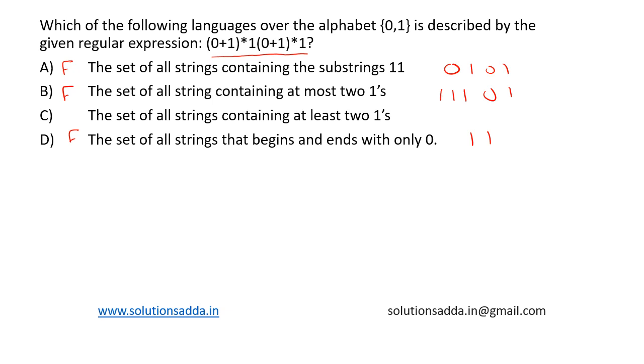Yes, this is correct because the minimum string that is generated by this grammar is 11. Now from this we can expand and generate more 1's. So option C is the correct answer—that is, the set of all strings containing at least two 1's. Option C is the correct choice.